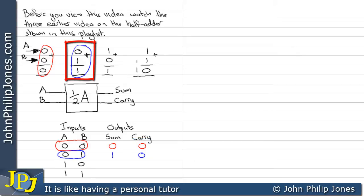Now this addition here appears in the truth table as A being a 0 and B being a 1. And we can see that that gives us a sum of 1 and a carry of 0.